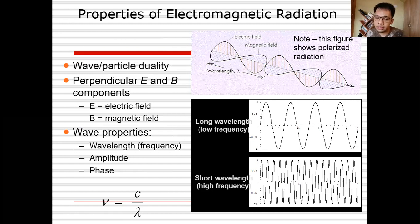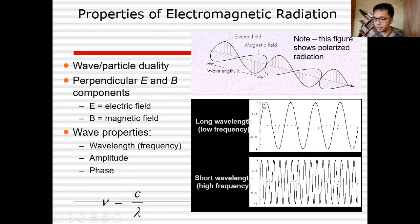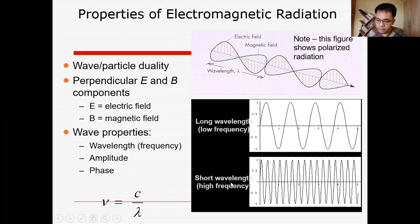So what are the properties of electromagnetic radiation? It has wave-particle duality. It also exhibits the perpendicularity of the electric field with respect to the magnetic field, which is demonstrated by polarized radiation. That is why it is called an electromagnetic field — it comprises a perpendicular relationship between the electric field and the magnetic field. We have the formula V equals C over lambda for frequency. The wave properties comprise wavelength, amplitude, and phase. Wavelength is the distance between two crests, and frequency is the number of cycles per second. Low frequency corresponds to higher wavelength; shorter frequency corresponds to shorter wavelength.